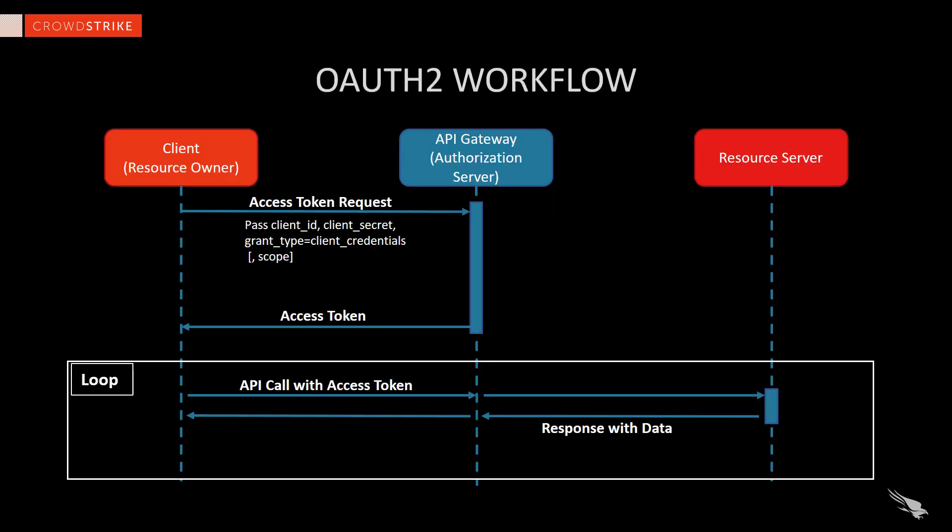OAuth 2.0 provides increased security, flexibility, and control for API access. Here we see a basic overview of the workflow for OAuth 2. OAuth 2.0 introduces an API authorization gateway and the concept of access tokens. With this model, the client ID and secret no longer have to be provided for each API call. After the initial authorization, the issued token can be used for multiple calls until the configured expiration time, at which point the client credentials are provided again for a new token.